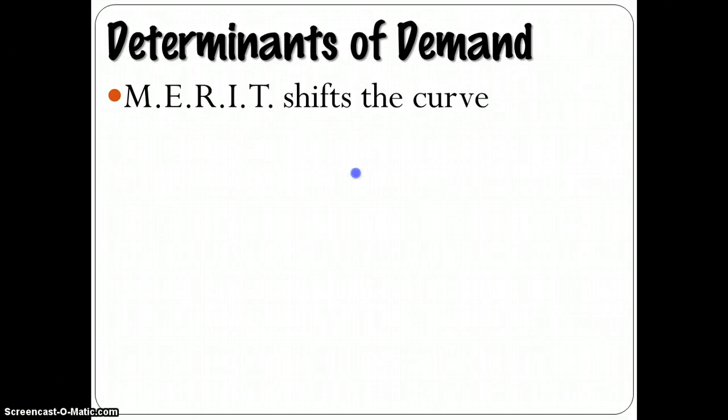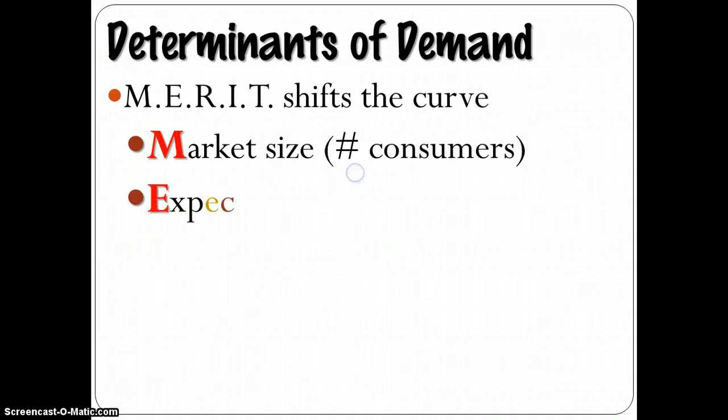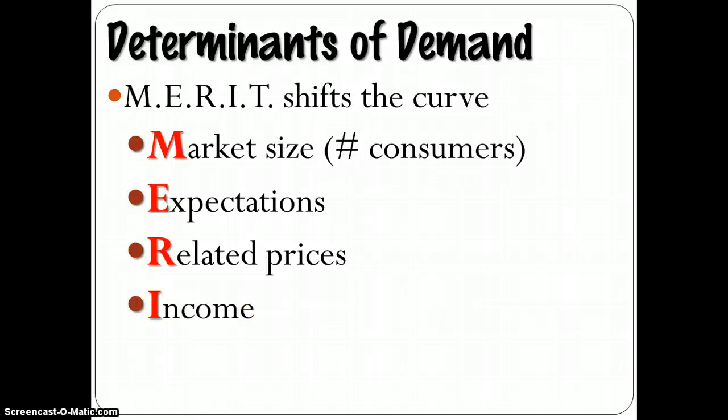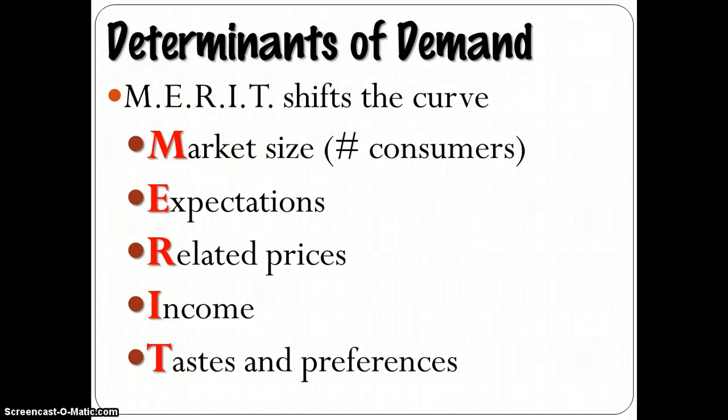Those other factors are called the determinants of demand. And we can use a mnemonic called MERIT to help us understand what causes a shift in the demand curve. The M in MERIT is the market size, or the number of consumers, the E is expectations of consumers, the R is related prices, or prices of related goods, I is income, and T is our tastes and preferences. All of those will impact our demand schedule and cause it to shift if there is a change in any one of those factors.